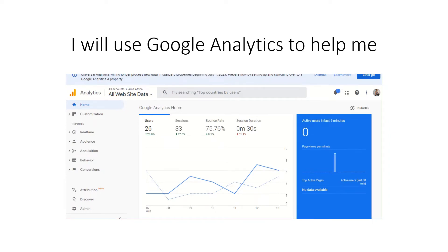This is my Google Analytics data for my Alma Africa Store starting August 7th through August 13th. I had 26 users for that week, a 23.8% increase from last week. Users are the visitors to your site. The sessions increased to 33. A session is when a user visits your site and clicks on different products and pages, and it usually doesn't extend past 30 minutes.